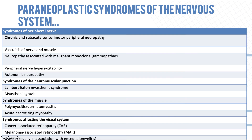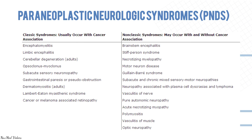Peripheral nerves can be affected, with vasculitis of nerves and muscles, nerve excitability disorders, and autonomic neuropathy. Well-known examples include myasthenia gravis, polymyositis, and Lambert-Eaton myasthenic syndrome. These are classic syndromes occurring with cancer association, while non-classic syndromes may occur with or without cancer.